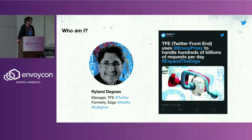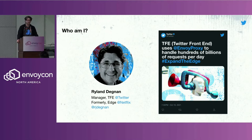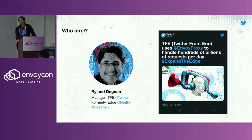My name is Ryland. I'm the manager of the TFE team at Twitter, which is the Twitter front end team. Formerly, I was on the edge team at Netflix, so I've been thinking about problems at scale at the edge for a while. The TFE team at Twitter is now responsible for handling hundreds of billions of requests a day filtered through Envoy, and everything I'm going to talk about is essentially the result of two years of work on behalf of the TFE team. I also wanted to mention the CSL team — the core systems library team at Twitter — who the TFE team collaborated with to adopt Envoy at scale within Twitter.